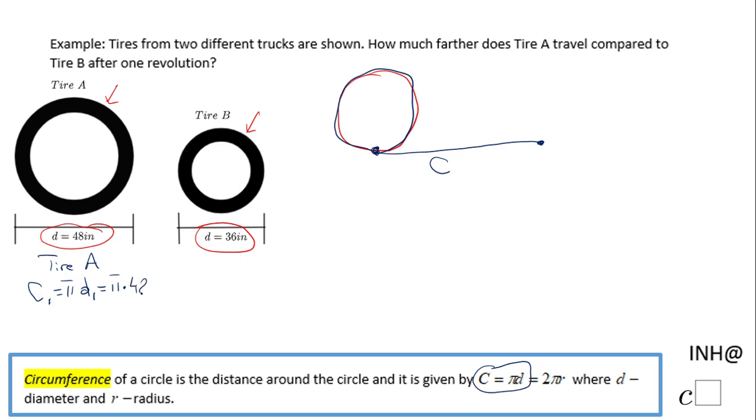So I end up with 48π. I'm going to keep the answer in π. Similarly, I'm going to look for Tire B.